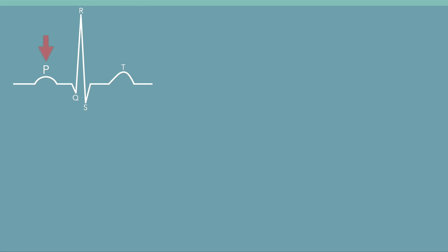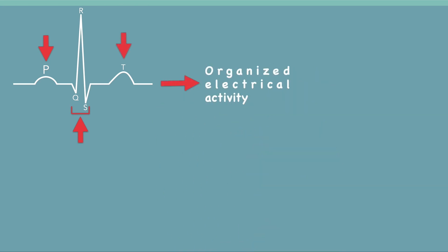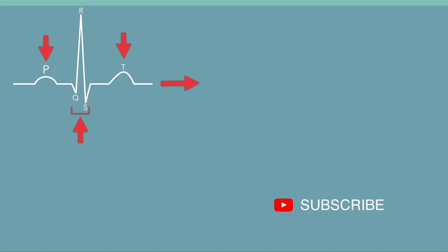This is the normal cardiac rhythm you would see on an EKG trace or cardiac monitor. A regular electrical rhythm has a P wave followed by a QRS complex followed by a T wave. This shows the electrical activity of the heart to be organized, which means the heart is contracting and relaxing normally. In this case, we call it a sinus rhythm.